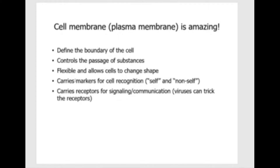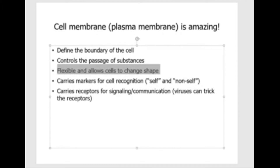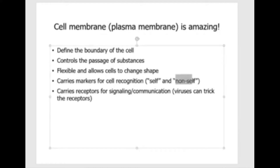The cell membrane itself is not rigid at all. It can be really, really flexible, and this allows the cell to change shape. For example, red blood cells and white blood cells often have to go through very tiny structures, very little space, so they can change their shape to squeeze through. The cell membrane also carries markers for cell recognition. This is how your body can tell whether a cell is self, coming from your body, or non-self, coming from another individual, another species, or an external source.